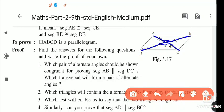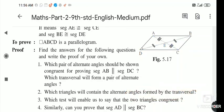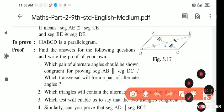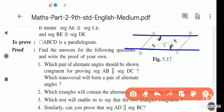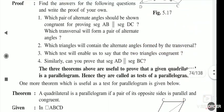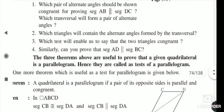Therefore the corresponding angles BAC and ACD are congruent to each other. Since these corresponding angles are congruent, the given lines are parallel to each other by the property of parallel lines and their transversal.